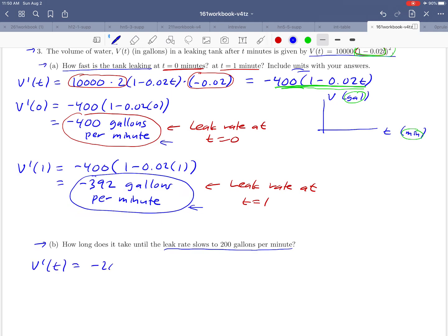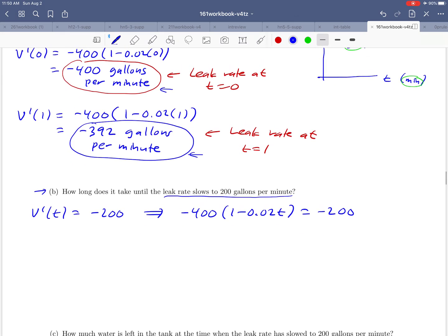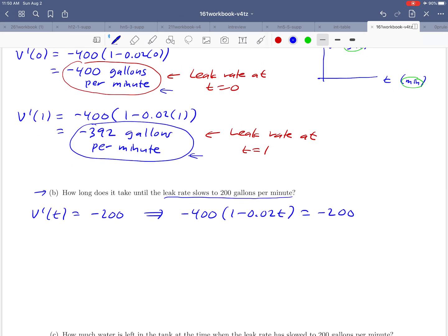So let's do that. Do we have a formula for the derivative? We sure do. Looking back up here at part A, it looked like negative 400 times (1 minus 0.02t) equals negative 200. If we can solve that equation for t, we've got an answer to part B here. So let's work through the details here. If we multiply the negative 400 through, we're going to get negative 400 and then plus 8t equals negative 200.